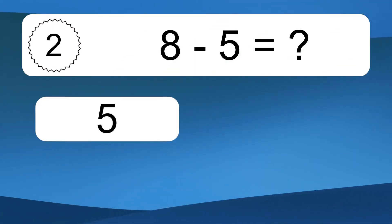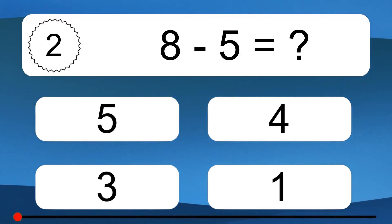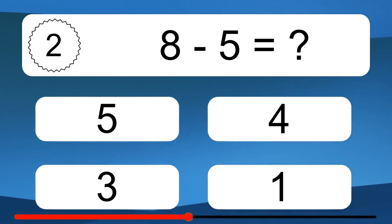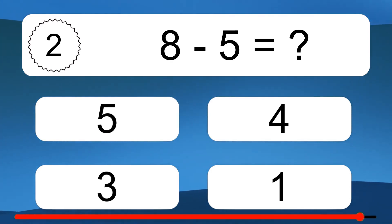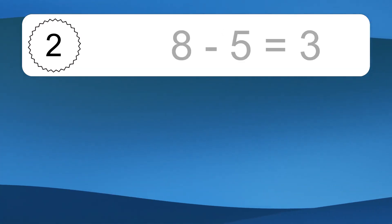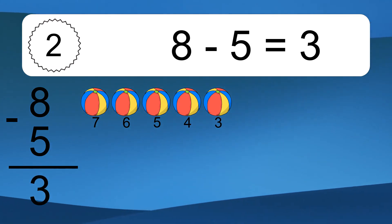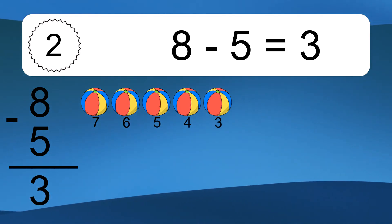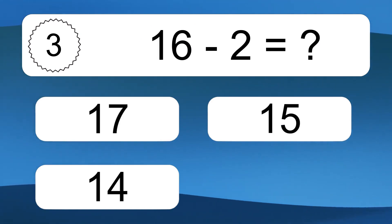8 minus 5 equals what? 8 minus 5 equals 3. Let's count it. 7, 6, 5, 4, 3.